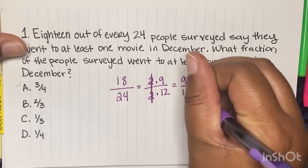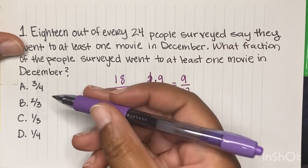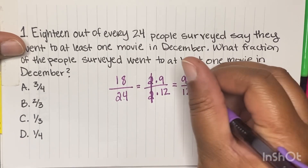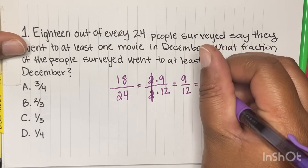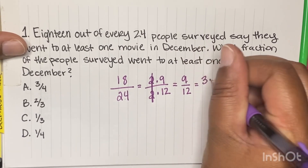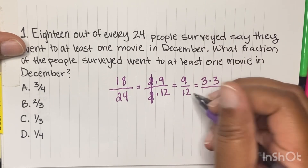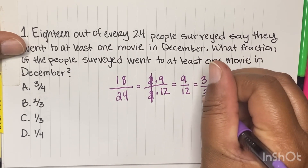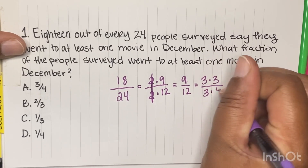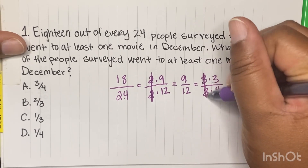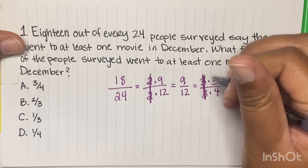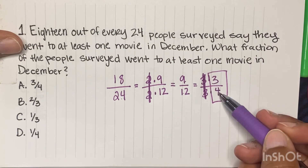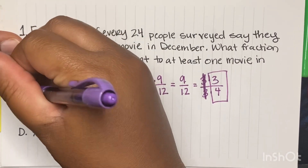9 over 12 still has something in common. So what times what gives you 9? That's 3 times 3. And what times what gives you 12? 3 times 4. So the 3s cancel out. So we're left with 3 over 4, which is A.